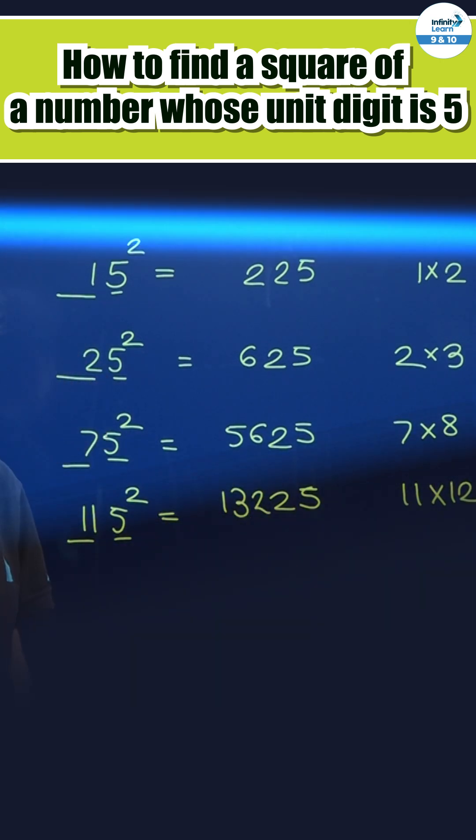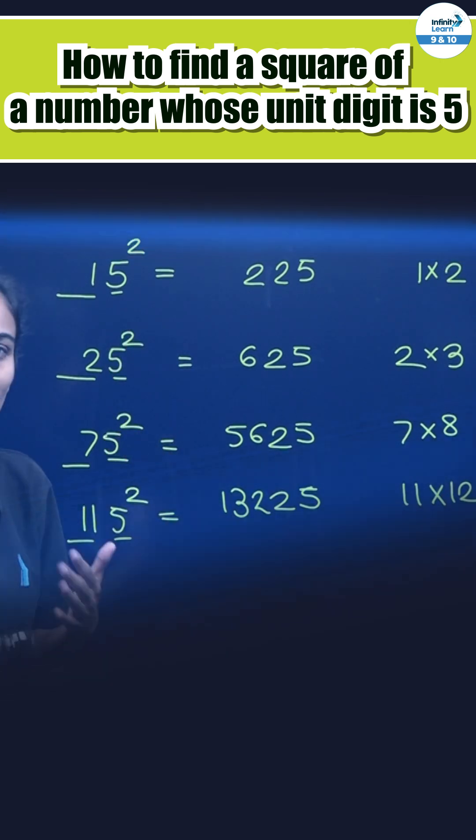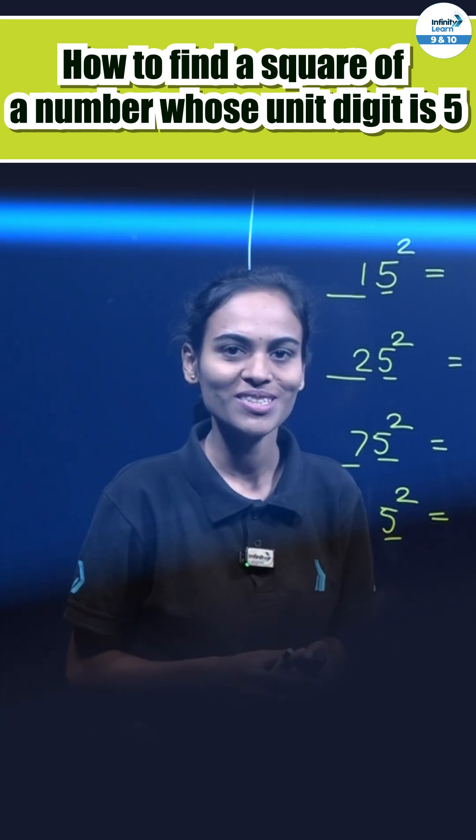So please follow this process to find square of a number whose unit digit is 5. It will take very less time and you can find your square very easily. Thank you so much.